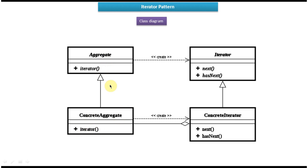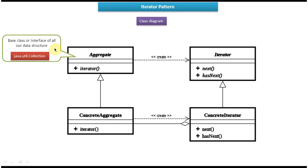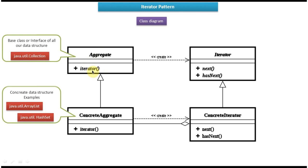Let's look at each component one by one. Aggregate is nothing but a base class or interface for all data structures. An example of Aggregate is Collection. Data structures like ArrayList, Vector, and HashSet are examples. It has an iterator method. Concrete Aggregate examples include ArrayList, HashSet, or Vector, which implement the Collection interface. It has an iterator method, and this iterator method will be implemented properly to provide the concrete iterator.